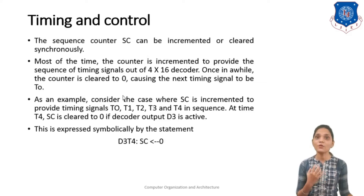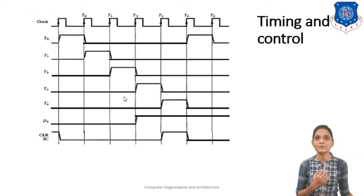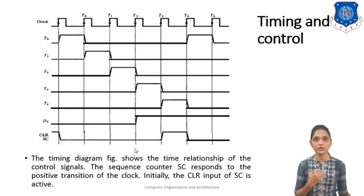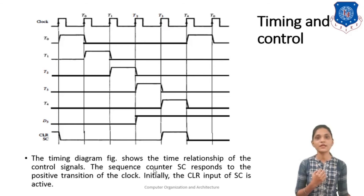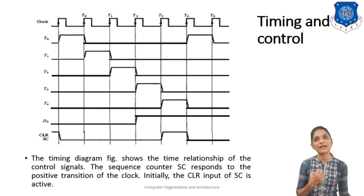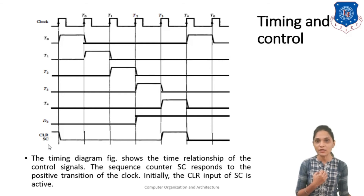So this is our circuit diagram showing how we can generate timing and control signals. Next we will see how these timing signals are presented. The timing diagram shown in the figure shows the time relationship of the control signals. The sequence counter SC responds to the positive transition of a clock. Initially the clear input of the sequence counter is activated, meaning your sequence will start from 0. The diagram shows T0, T1, T2, T3, T4, D3, and the sequence counter SC.